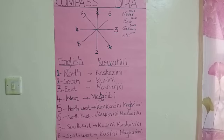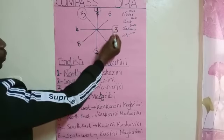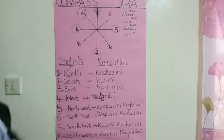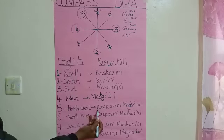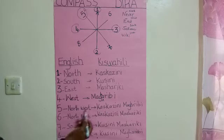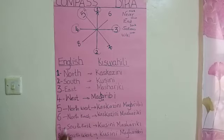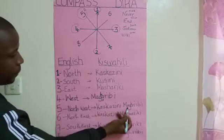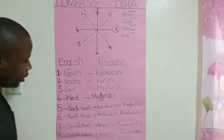In continuation, we get to number five. We started from one, two, three, four, and now we are at number five. Number five in English is Northwest. Northwest in Kiswahili is 'kaskazini magaribi.' It simply means you take north — kaskazini — and add magaribi. So it is north-west: kaskazini magaribi. There is an H in the spelling as well. You write M-A-G-H-A-R-I-B-I; it becomes magaribi.